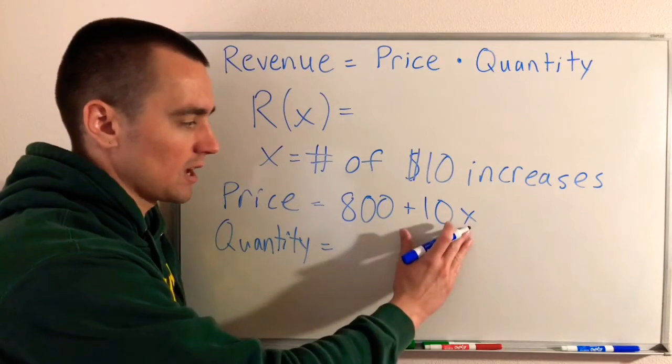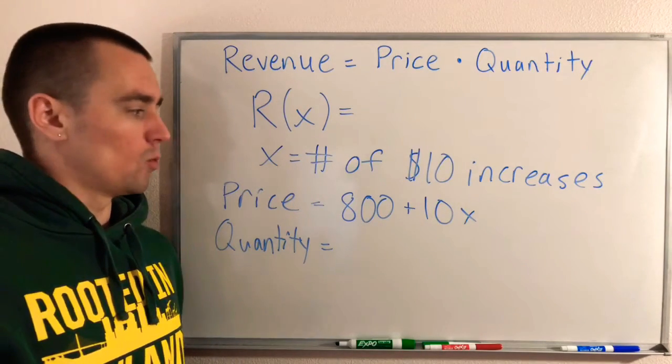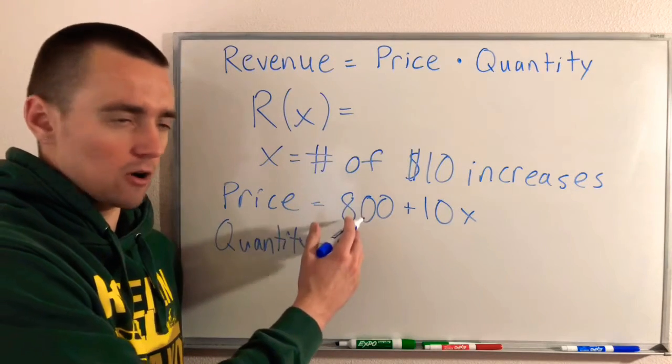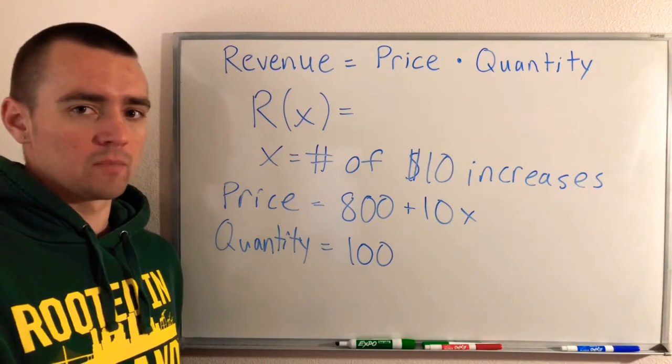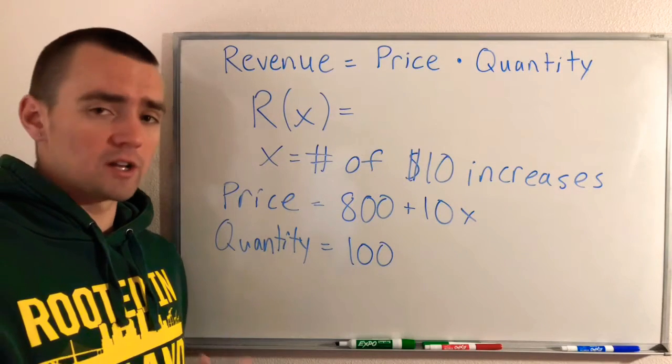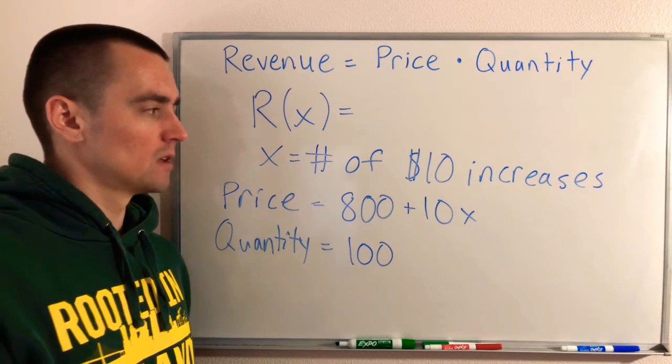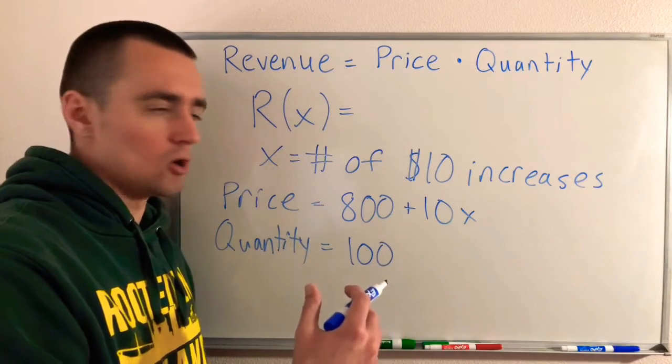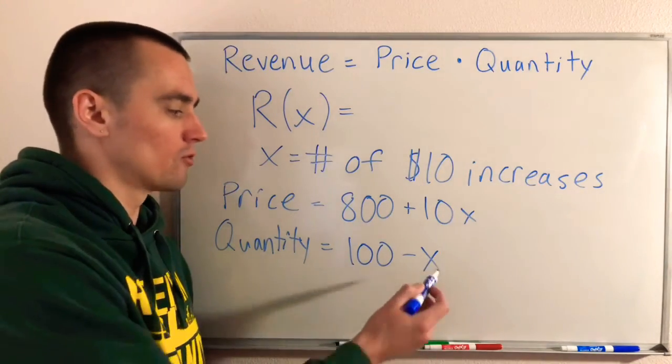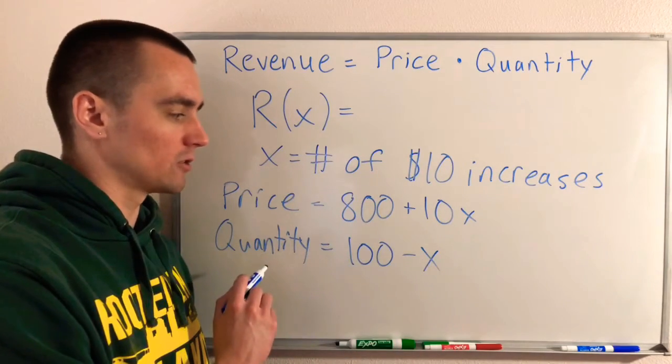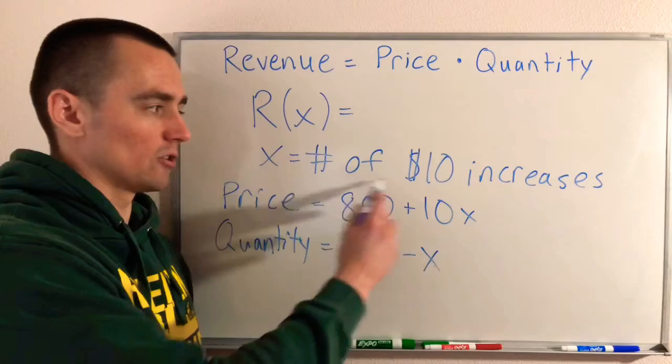Now let's think about the quantity. When our price is $800, our starting point when we haven't applied any $10 increases, we have all 100 apartments occupied. The problem tells us one additional unit will be vacant for each $10 increase we apply to the price. So each time we increase X by one, we're going to lose one more room out of our occupancy. The total number of rooms that are filled is going to be 100 rooms minus however many $10 increases we've applied: Quantity = 100 - X.